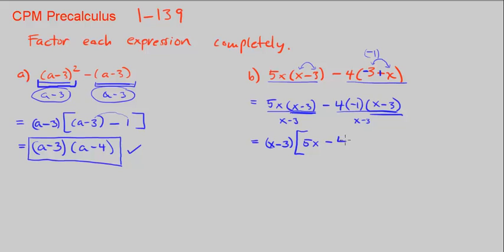So we're left with just 5x in our first term, and over here, we're left with 4 times negative 1, right? So let's just simplify this. We have (x-3), and 5x minus 4 times negative 1, well, if we multiply these, this becomes positive, so it's going to be 5x plus 4.